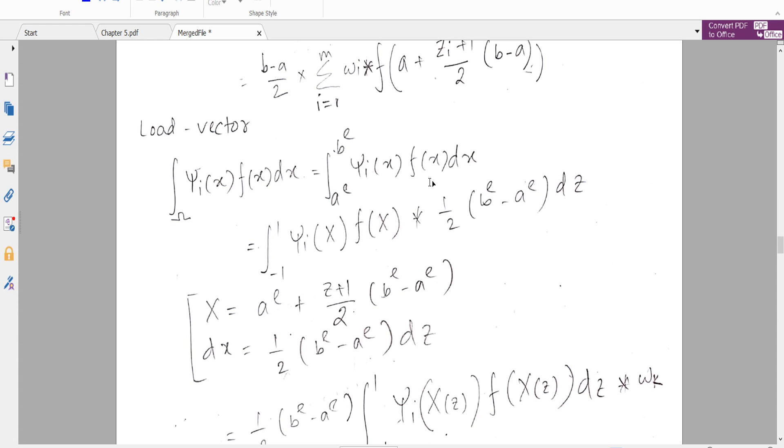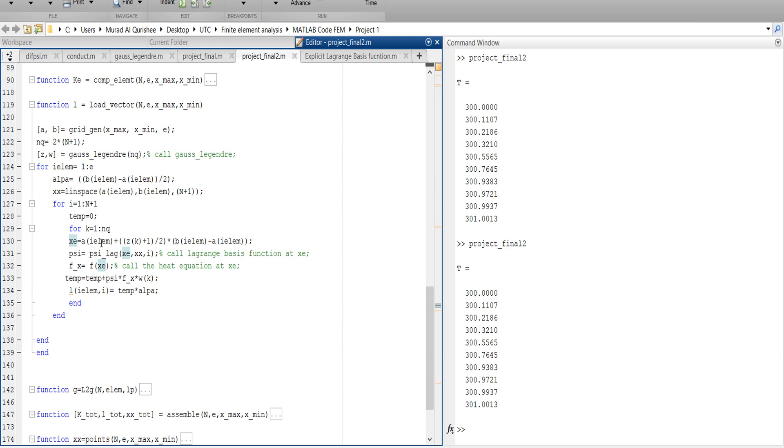And this is the form. Here we are converting it to minus 1 to 1. When it is converting, X equals to a plus (1 + Z) times (B - A) divided by 2. This is called the element, we are calling this one X_e.